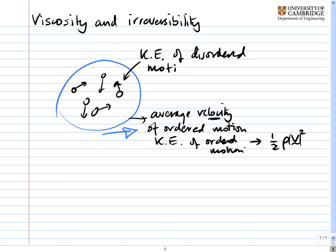So we can look at the kinetic energy of the disordered motion. This is measured by the speeds of each molecule. And note the difference between the speeds and the velocity. The speeds is just how fast they're moving around. And the energy of that is really measured by temperature.